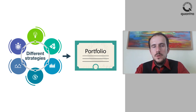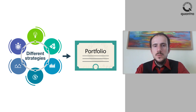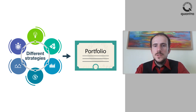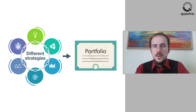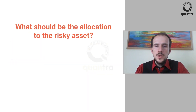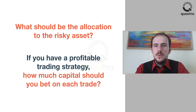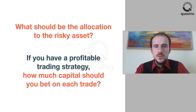This is the reason why many traders diversify their assets and their trading strategies. A typical portfolio would include risky assets such as equities or cryptos and relatively risk-free assets such as government bonds. But what should be the allocation to the risky asset? Or if you have a profitable trading strategy, how much capital should you bet on each trade? This is where the need for position sizing arises.